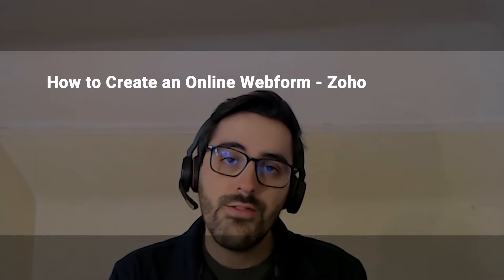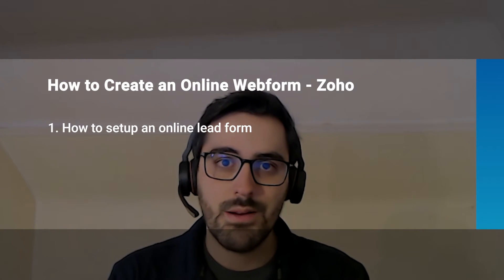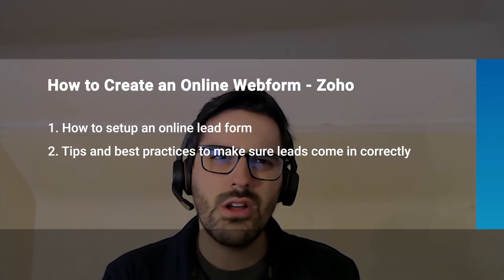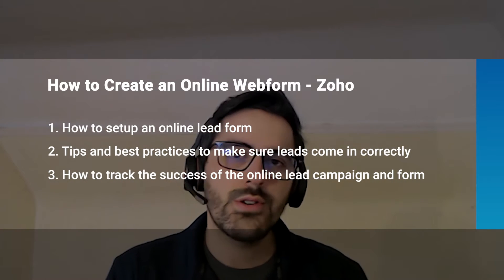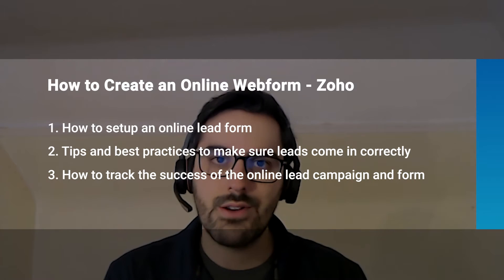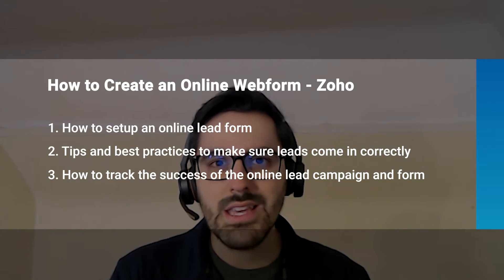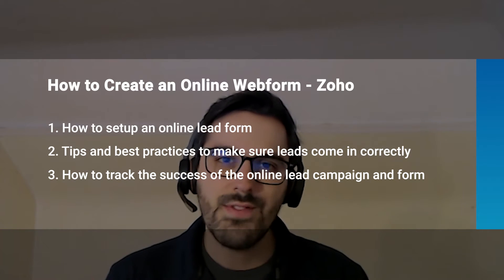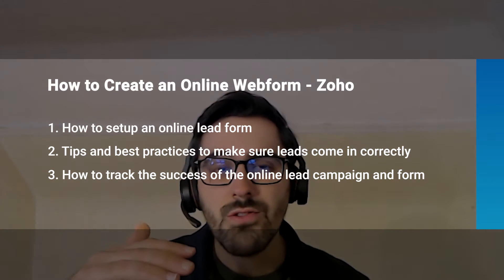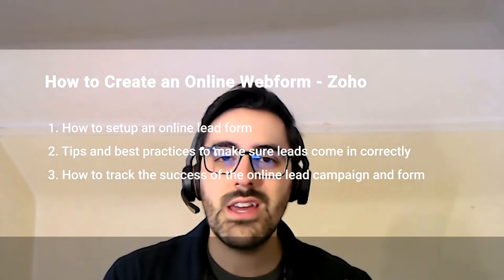In this video I'm going to go over a few key things so that you can make an online web form and put it on your site in honestly minutes. Number one, where to find this inside of the CRM and how to set it up. Number two, some tips and tricks on things I've learned over the years on how to set it up properly so that your reporting works and some of your automations inside the CRM. And then lastly is how to look at analytics on it. Zoho CRM has this really neat feature where you can track who's going to your form, who's filling it out, who's half filling it out, and you can do some A/B testing over time.